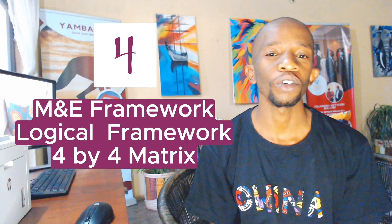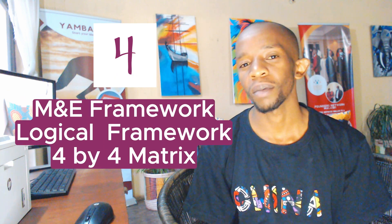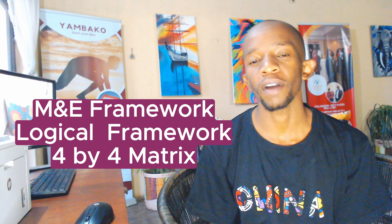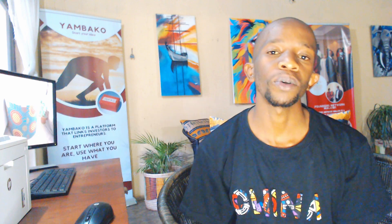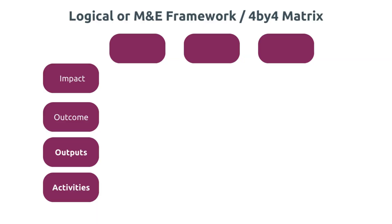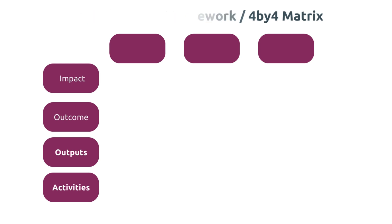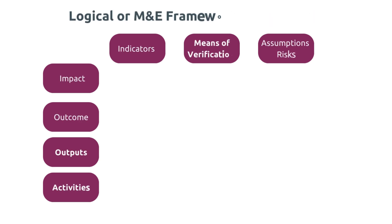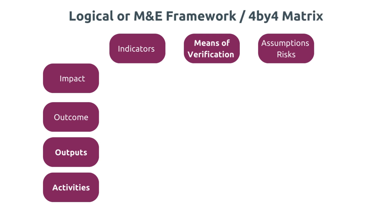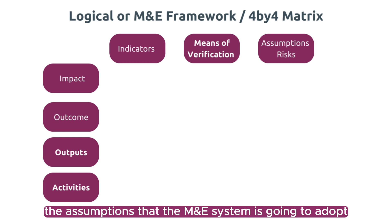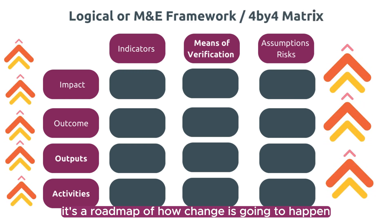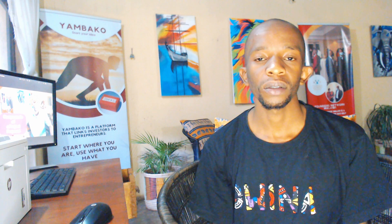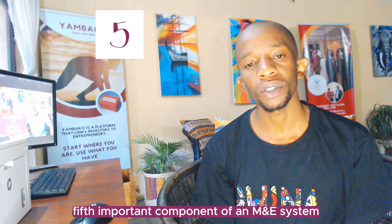The fourth important component is an M&E framework or a logical framework — sometimes referred to as a 4x4 matrix. An M&E framework outlines the project's inputs, activities, outputs, outcomes, and impact, along with the indicators that will be used to measure all of those. It also outlines the assumptions the M&E system is going to adopt. Essentially, it is a road map of how change is going to happen.